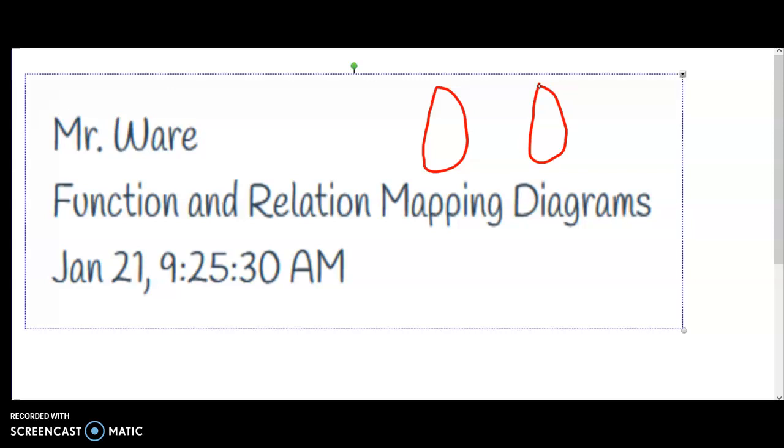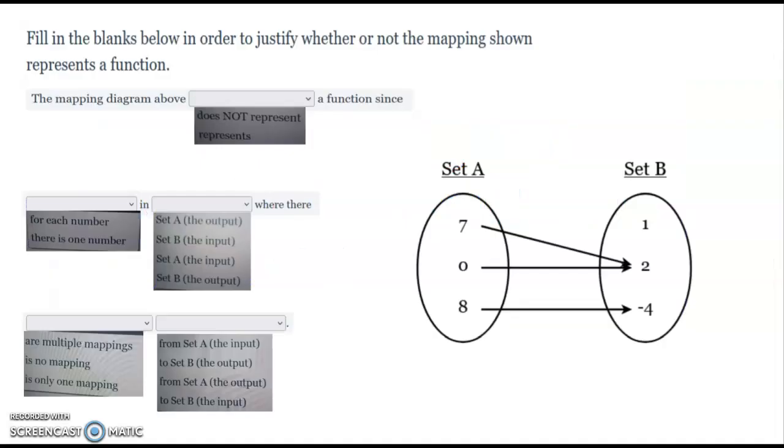What we want to know is whether it's a function or not. And this is all you need to do: know that if you have two lines coming from the same number in the first column, then it's not a function. As long as there's only one line coming from there, you're fine—it's a function.